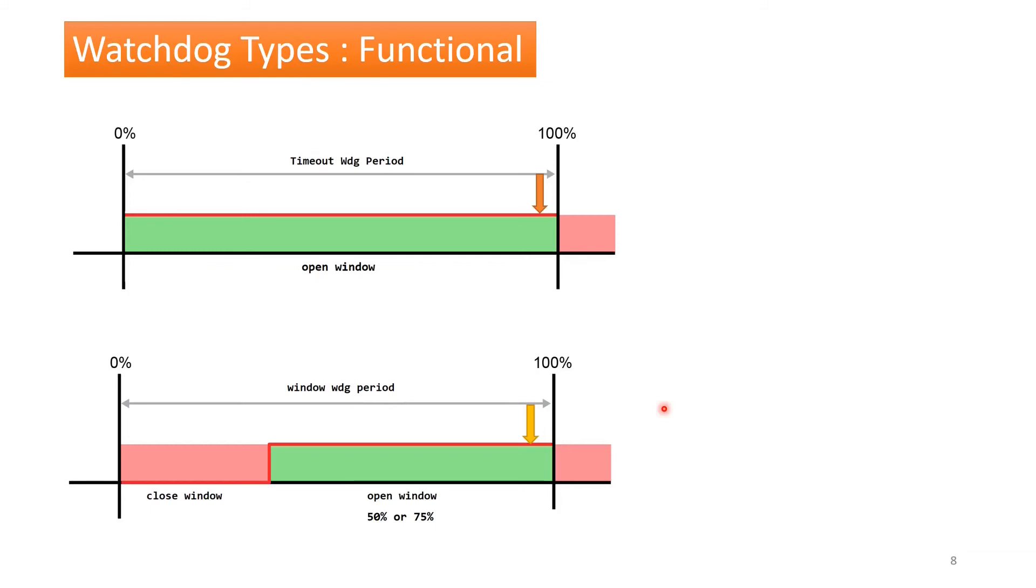How to trigger the watchdog is the next question. For the timeout mode it can be done via a periodic task. For the window mode we can have one timer-based interrupt which could activate one asynchronous task, and then it could do the watchdog trigger.